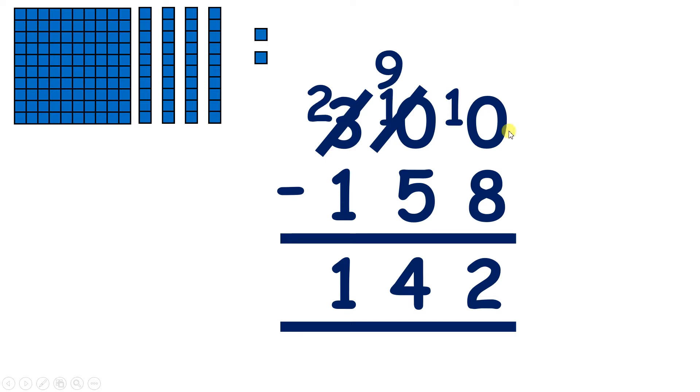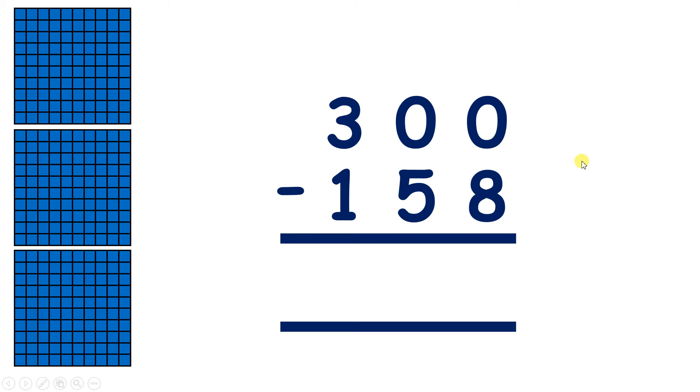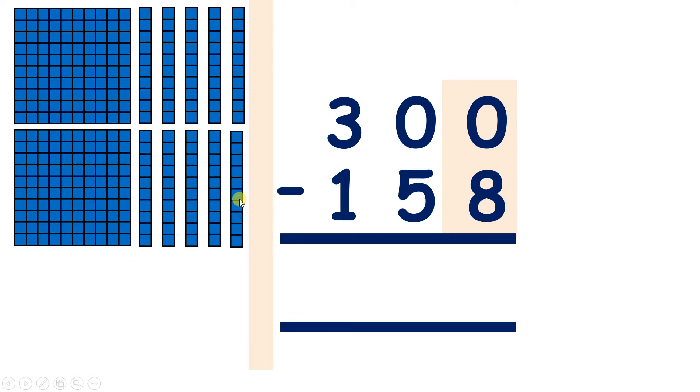But we had to do a lot of crossing out here. So let me show you an easier method for exchanging across place values, exchanging from hundreds to units. So we start with units. We can exchange and then exchange again.